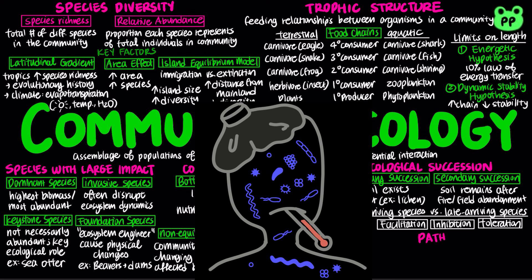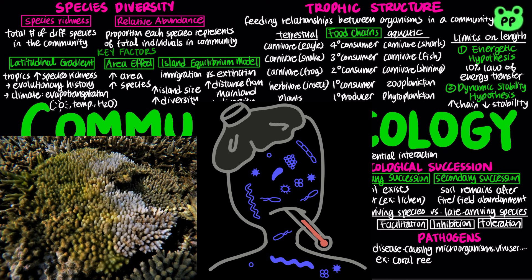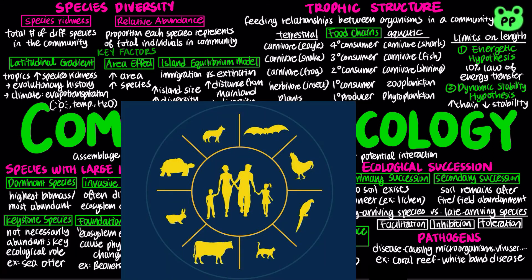Ecological communities are universally affected by pathogens, which include disease-causing microorganisms, viruses, viroids, and prions. Pathogens can alter community structure quickly and extensively. For example, coral reef communities can be decimated by white-band disease. Zoonotic pathogens are pathogens that have been transferred from other animals to humans, either through direct transfer or through an intermediate species called a vector.